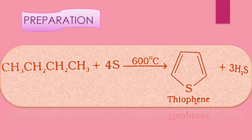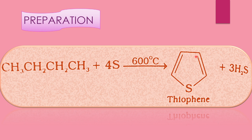The next point is preparation of thiophenes. First, see the reaction of N-butane with sulfur at a temperature of near about 600 degrees Celsius and formation of thiophenes. Here, CH₃CH₂CH₂CH₃ means N-butane — 4-carbon means butane. It reacts with sulfur, heated up to 600 degrees Celsius, and thiophene is formed. This five-membered ring structure is formed from the straight butane structure.